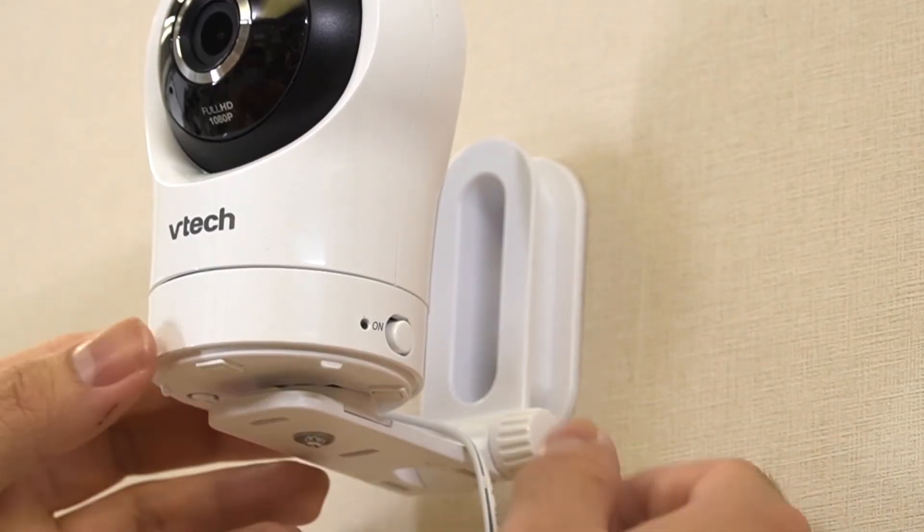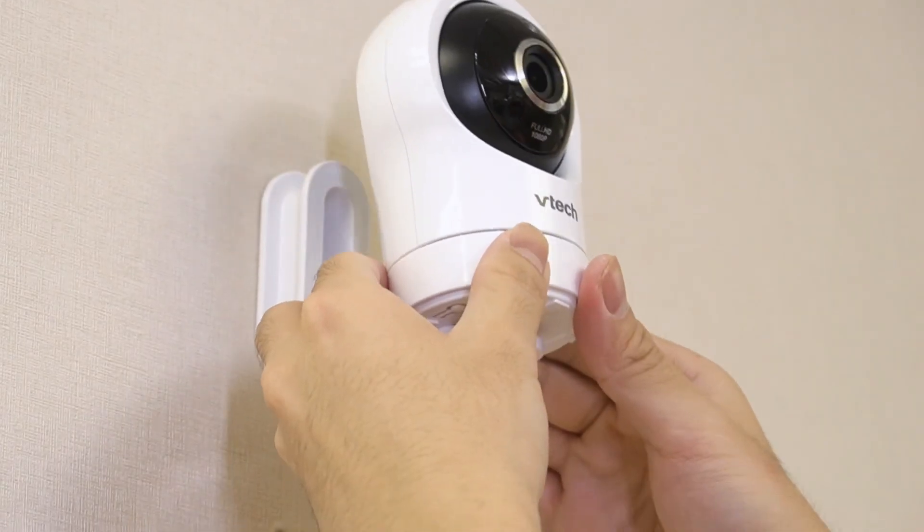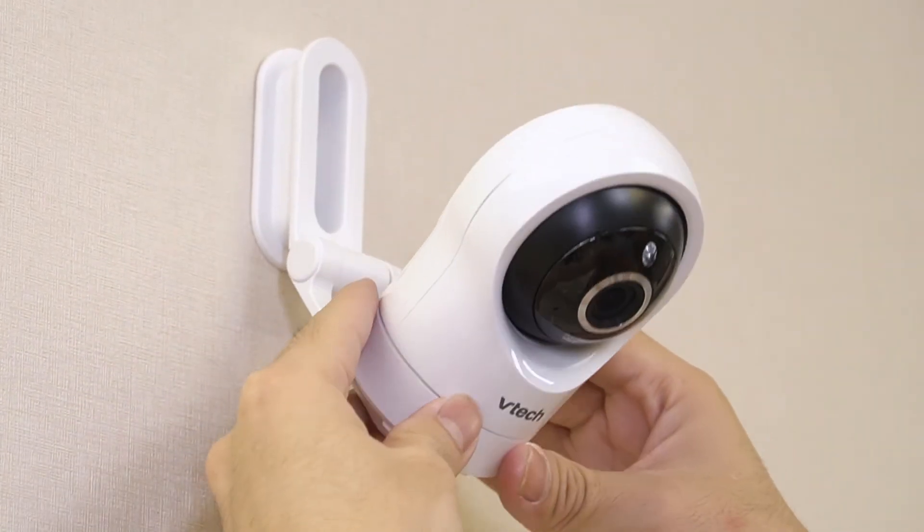Now, hold the baby unit and rotate the knob anti-clockwise to loosen the joint. Tilt your baby unit up or down and find the best angle for seeing the baby's room.